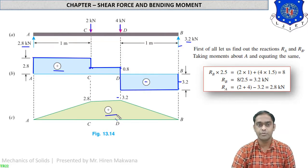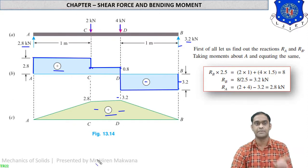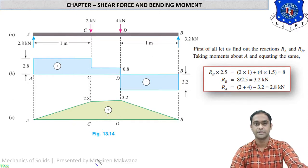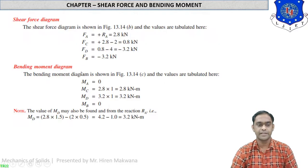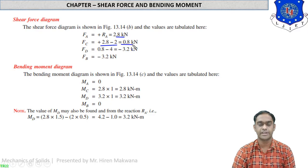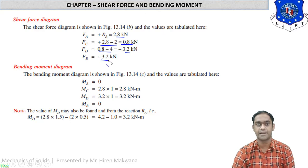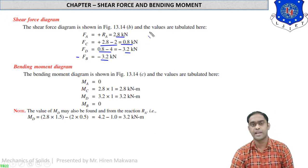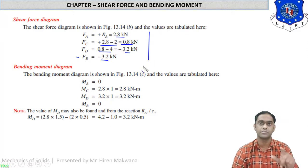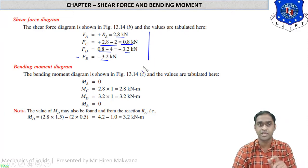Now let us see how the bending moment diagram is calculated. At point A the shear force is 2.8 kN upward. At point C it is 2.8 − 2 = 0.8. At point D it is 0.8 − 4 = −3.2. At point B, FB = −3.2 + 3.2 = 0. This is the complete shear force diagram calculation.